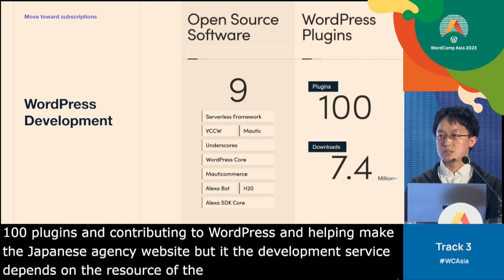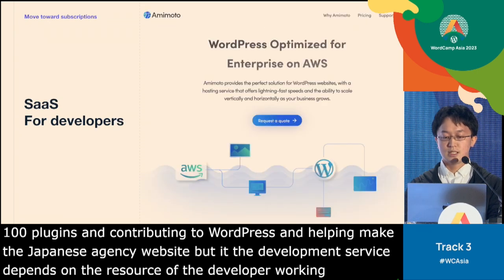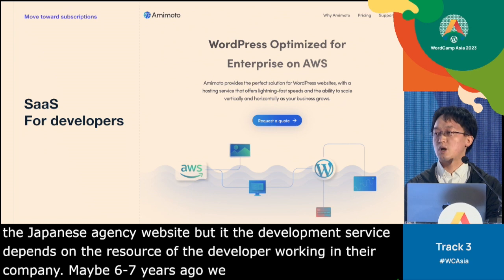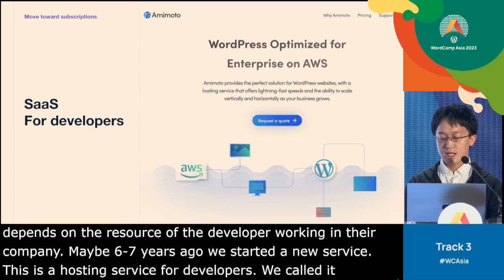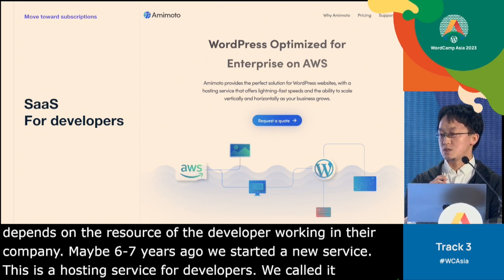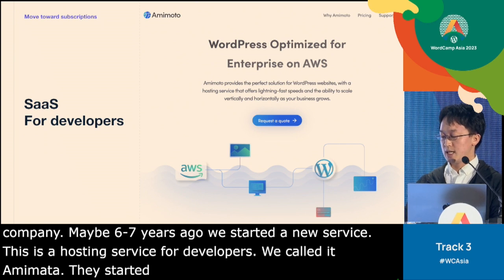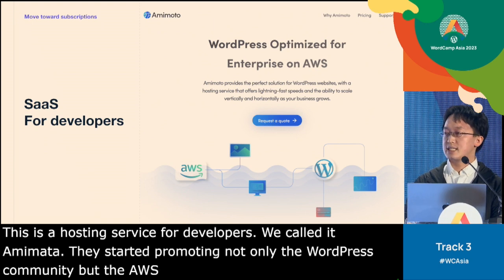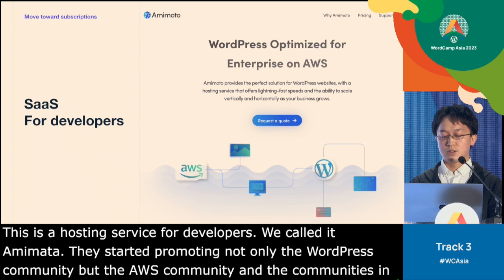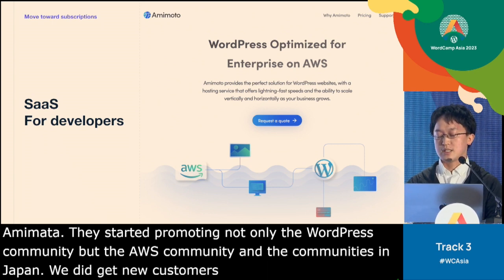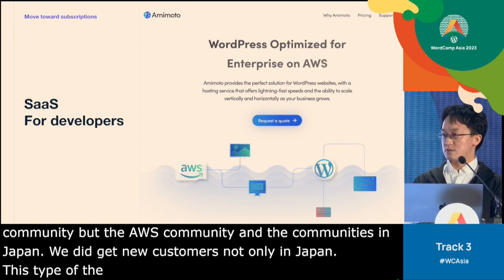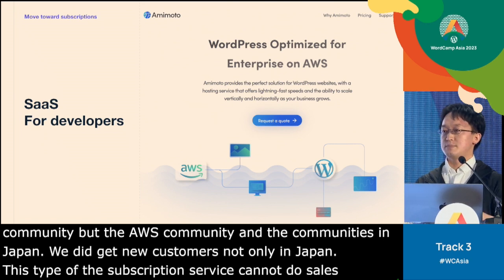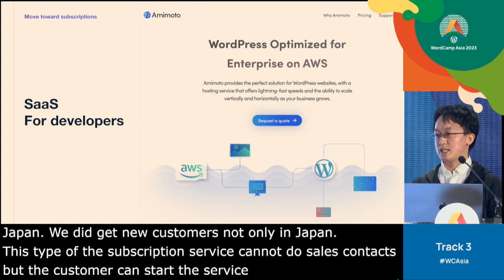So maybe six or seven years ago, they started a new service called Amimoto — a hosting service for developers. They started a WordPress hosting service billed monthly and annually, and promoted it not only to the WordPress community but to the AWS community and developer community in Japan. They got new customers not only in Japan, because this type of subscription service lets customers sign up themselves without contacting a sales or marketing member.